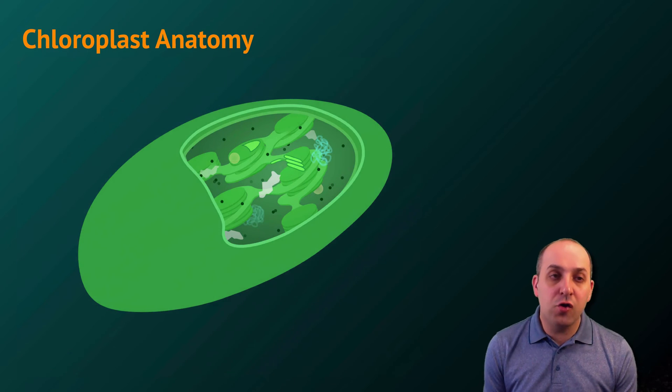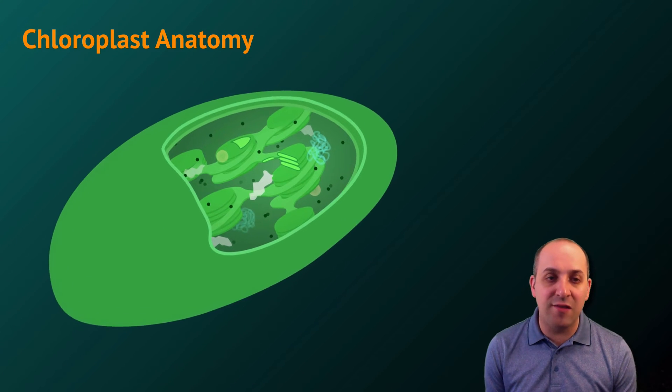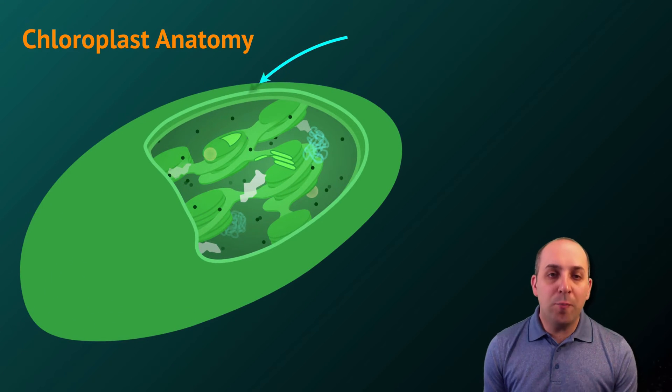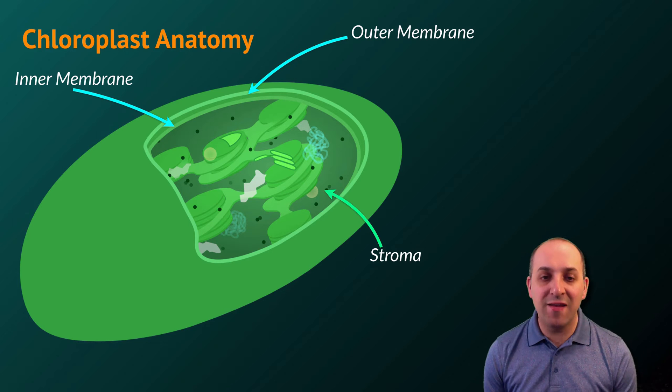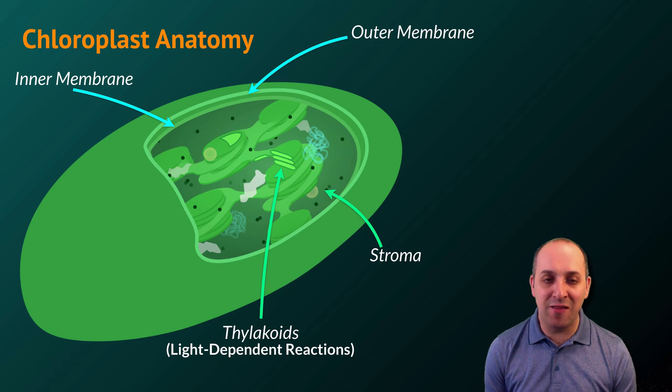Let's take a look at this cartoon image of a chloroplast and look at some of the features that it has. Chloroplasts have an outer membrane and an inner membrane. Inside of that inner membrane is a space referred to as the stroma, and inside of that stroma is another membranous structure known as the thylakoids. The light-dependent reactions happen in the thylakoids.